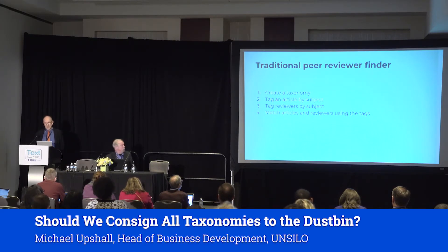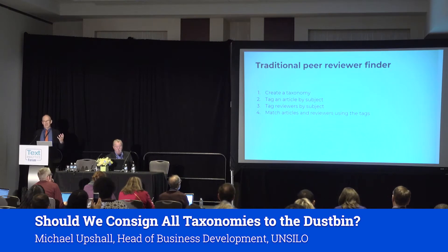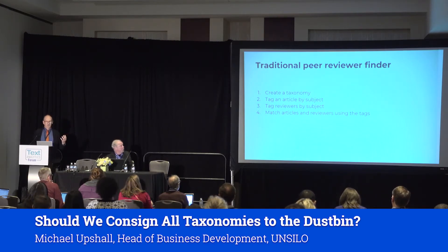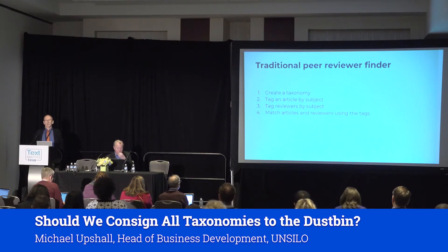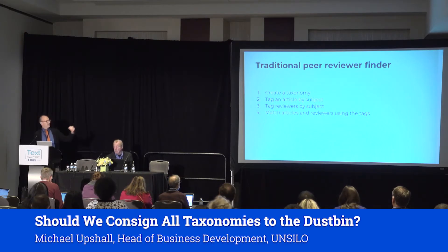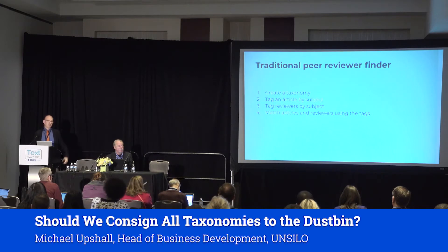Let's take one small example of one of the tasks that has to be done when a scholarly article is published — peer review, where you need to find somebody who can review the article you've just written. How that's done traditionally is where a taxonomy comes into play. An article will be submitted to a publisher. That article will then be tagged either by the author, the publisher, or some outsource company. The tag would be against some sort of corporate or subject taxonomy — MeSH is an example, or it could be an in-house one. Then you'd have a set of reviewers who also need to be categorised. Then it's simply a question of matching the articles and the reviewers. You notice we've gone through a four-stage process to get to the solution.